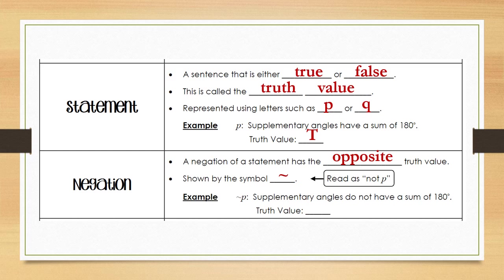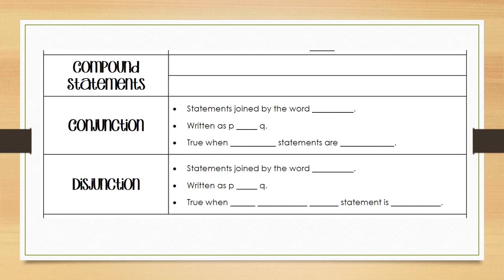If we take our previous statement 'supplementary angles have a sum of 180' and make not p, that would read: 'supplementary angles do not have a sum of 180 degrees.' Since the original statement was true, when we take the opposite of true, our new statement will be false.